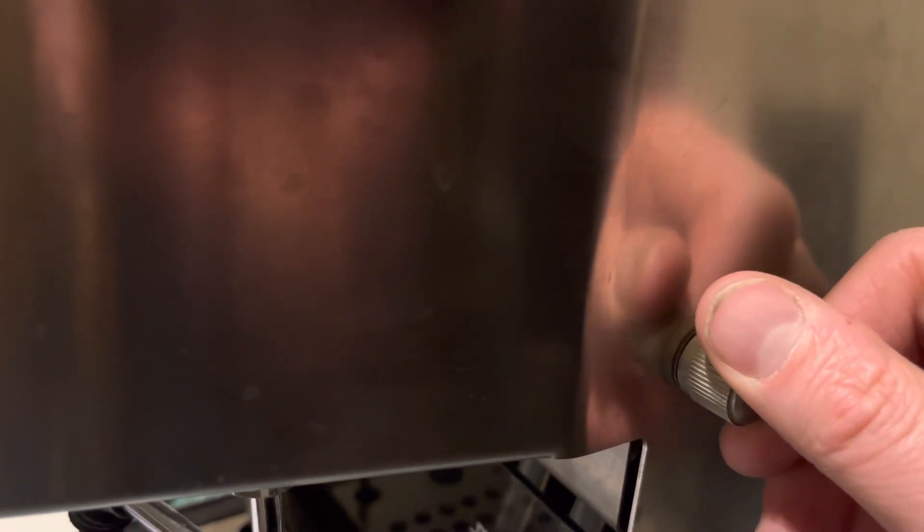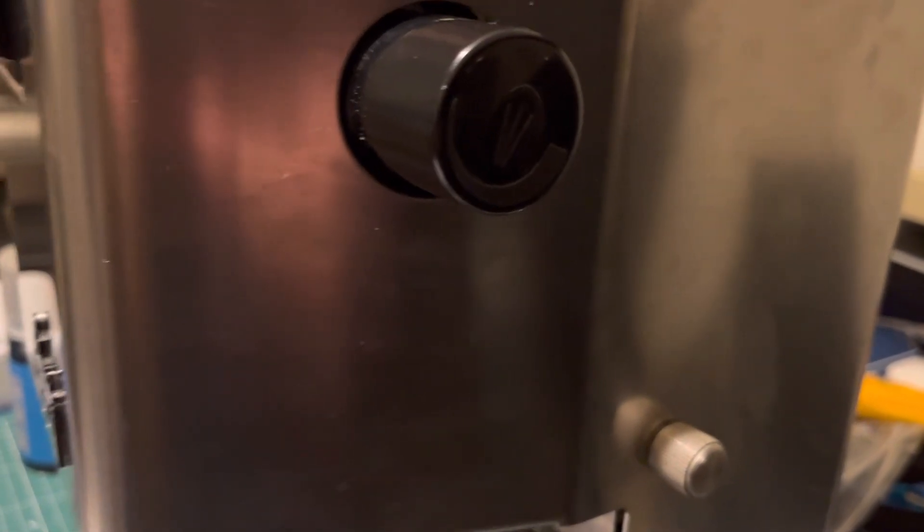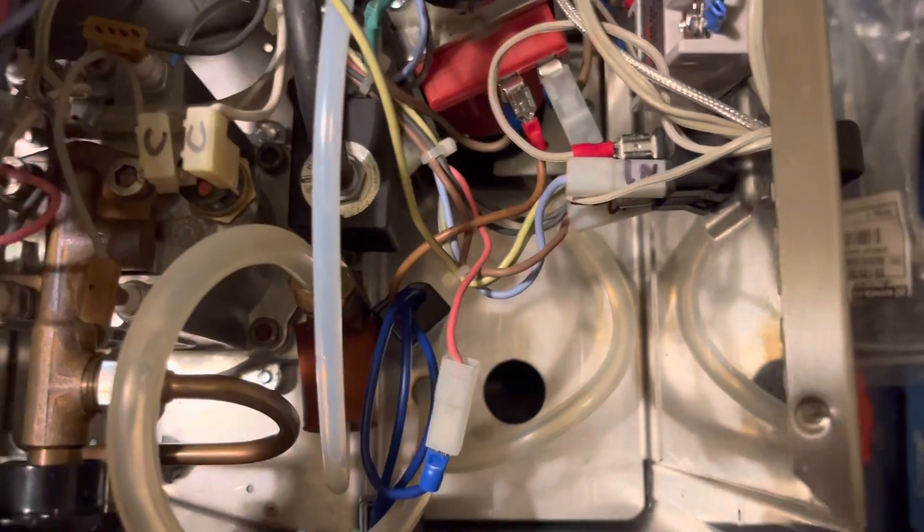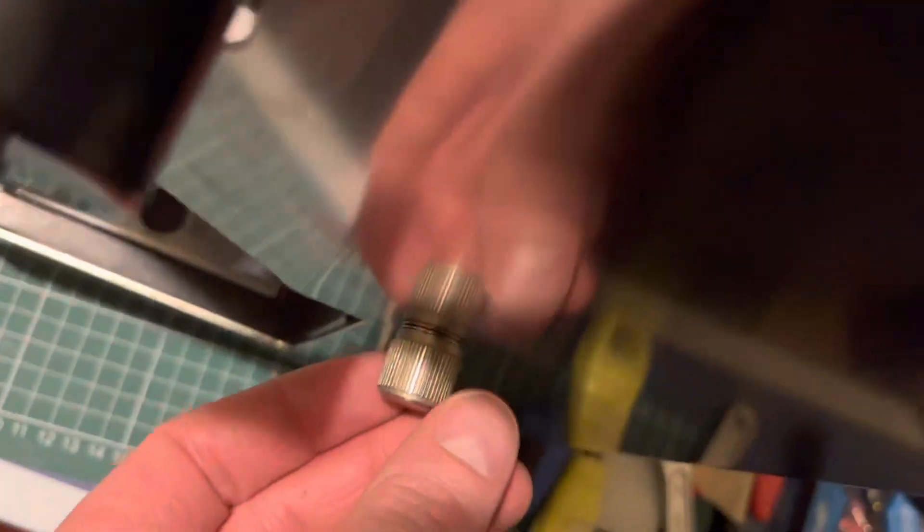I saw someone post this on Reddit. So what you do is, this is the dimmer, this is the potentiometer, and here is the electronics with the fuse.